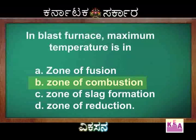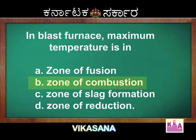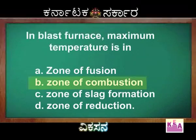To recap: zone of combustion — 900 to 1500 Kelvin; zone of reduction — 500 to 800 Kelvin; zone of slag formation — 1123 Kelvin.